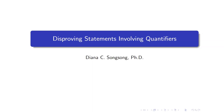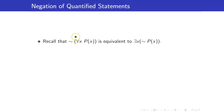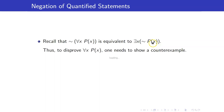In this lesson, we are going to discuss disproving statements involving quantifiers. Let us recall the negation of quantified statements. How do we negate a 'for all x, P of x' statement? That is just equivalent to proving an existential statement: there exists x such that not P of x.